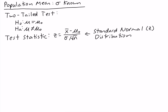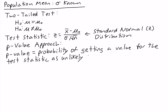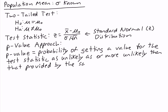There are two ways of using our test statistic: we could use the p-value approach or the critical value approach. In the p-value approach, we calculate something called a p-value. The p stands for probability — it's the probability of getting a value for the test statistic as unlikely as, or more unlikely than, that provided by the sample.